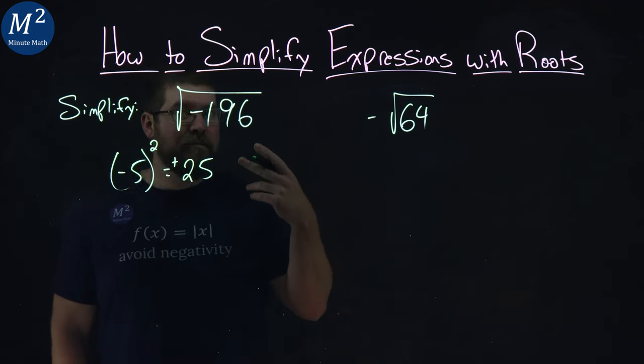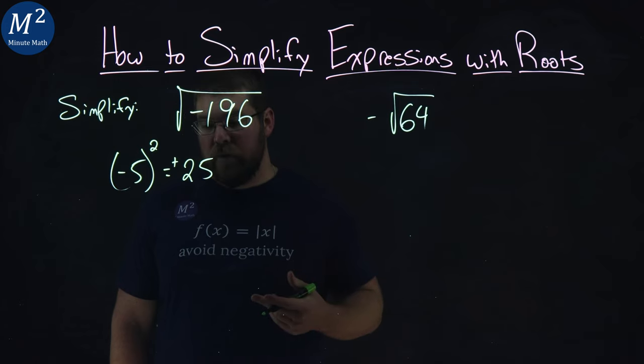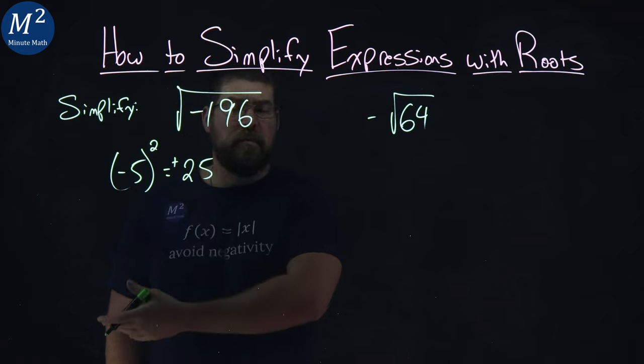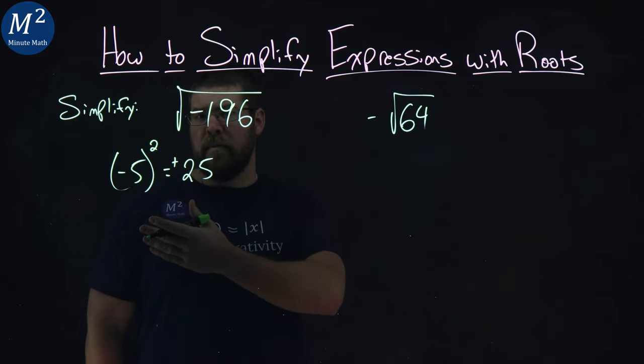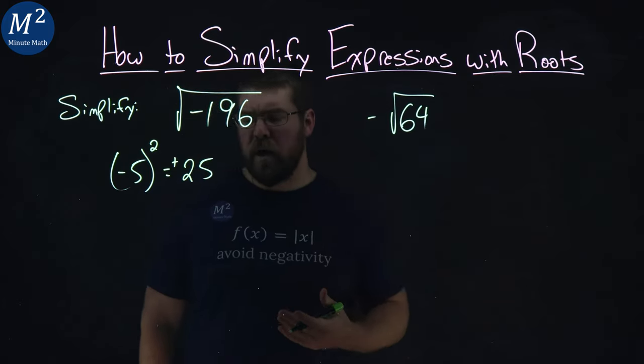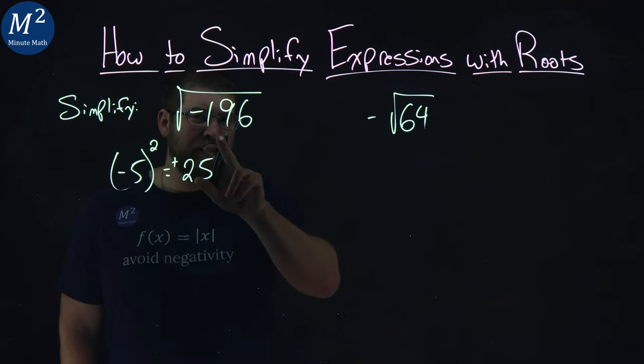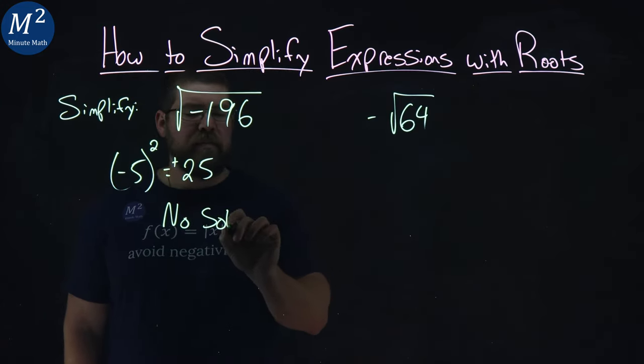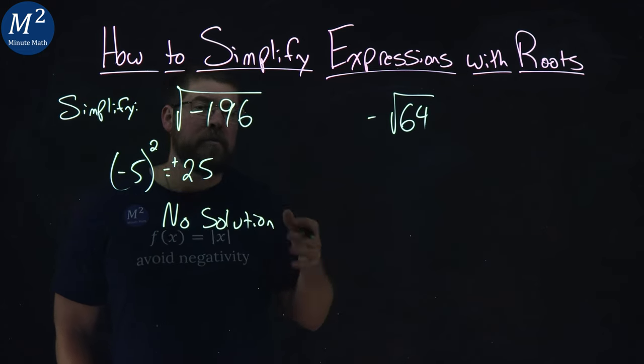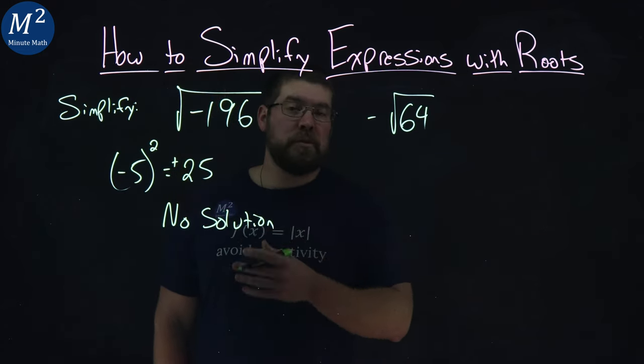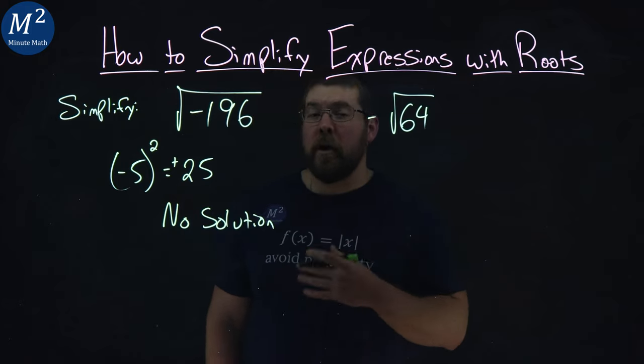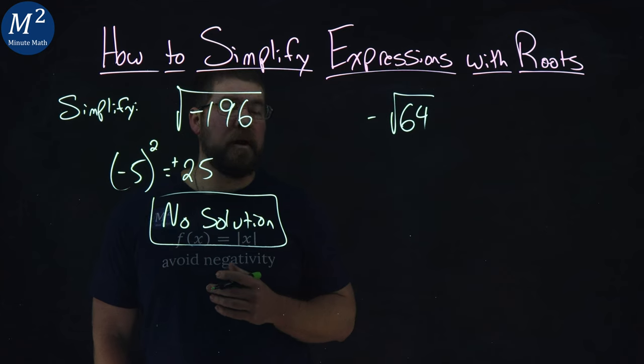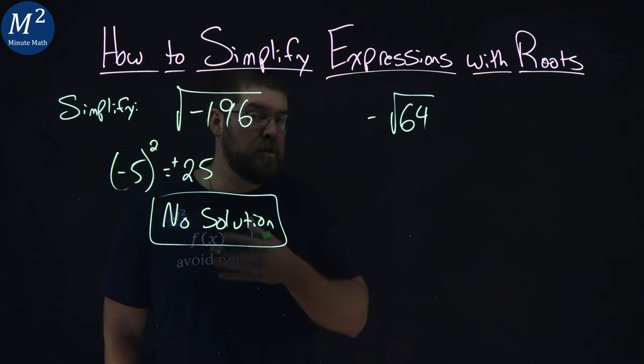Remember, squaring is multiplying a number by itself. So if the number is negative, a negative times a negative becomes a positive, and if the number is positive, a positive times a positive is a positive. And so right now, where we are, we have no solution here. There's no solution for the square root of a negative number. You can't do that. Now, eventually, you'll learn something called imaginary numbers, but for right now, if we take the square root of a negative number, it's no solution.